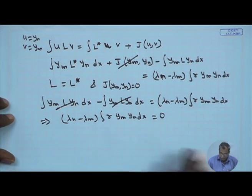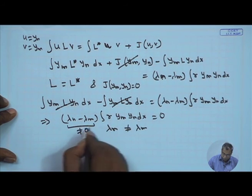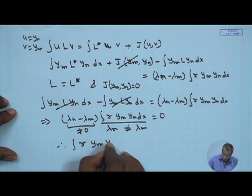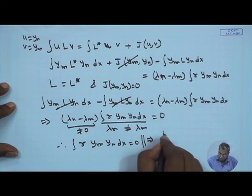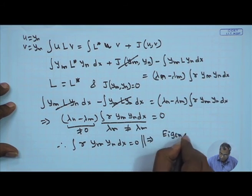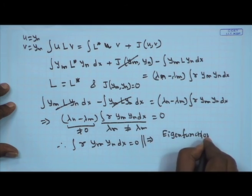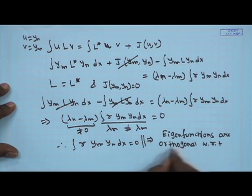Since λₙ and λₘ are distinct eigenvalues, λₙ ≠ λₘ, so that factor cannot be zero. Therefore ∫r yₘ yₙ dx = 0, meaning the eigenfunctions are orthogonal with respect to the weight function r(x).